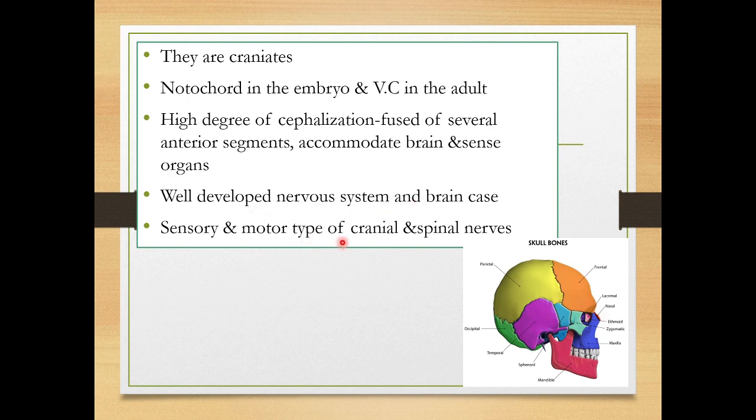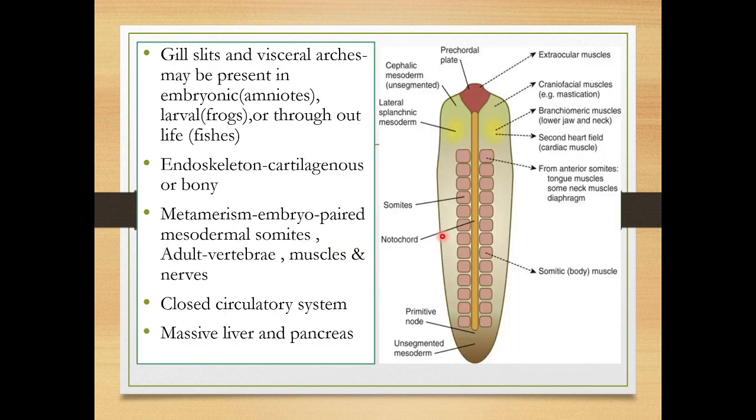There is a well-developed nervous system and a brain case. Sensory and motor types of cranial and spinal nerves are present. This is an important character of Vertebrata — sensory nerves carry sensory impulses and motor impulses through the cranial and spinal nerves.